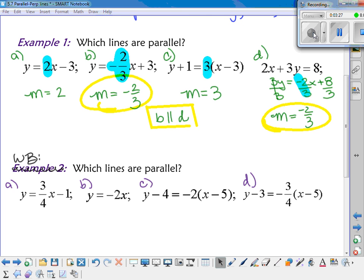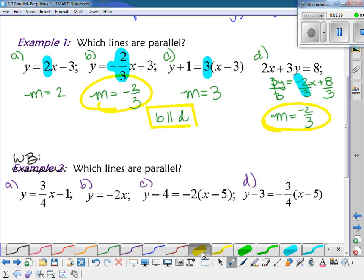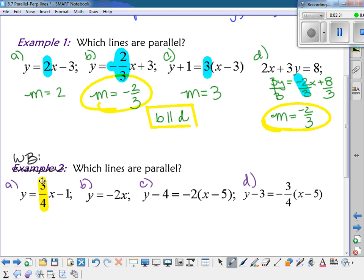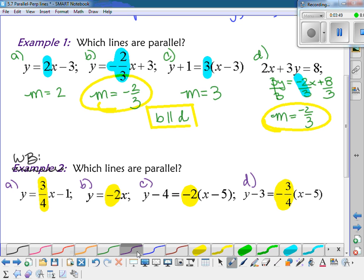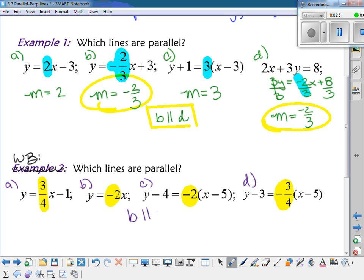Okay, so if you look at the slopes of the lines, the slope of A is 3 fourths. The slope of B is negative 2. The slope of C was negative 2. The slope of D was negative 3 fourths. So A and D are not parallel because one's positive and one's negative. But you can say that B is parallel to C.